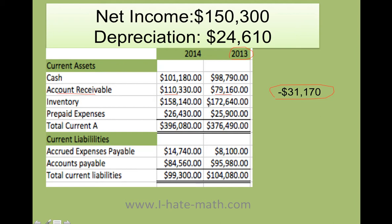Let's see what happens with the inventory. The inventory went from 172,000 to 158,000. That's actually good — that means that you're selling off your stuff, so cash is coming in and you have to add. Now let's talk about prepaid expenses. You have 25,000 in 2013 but in 2014 you actually have 26,000. Prepaid expenses are when you prepay rent or prepay your insurance — you're taking your cash out to prepay for something. So you subtract negative 530, which is the difference.